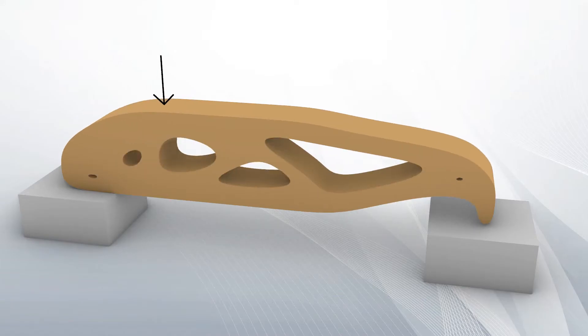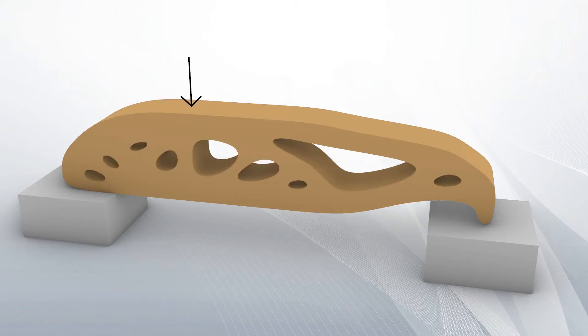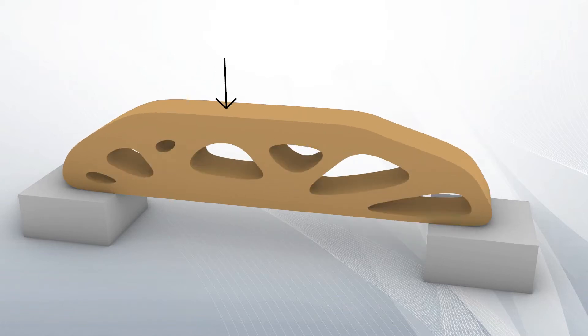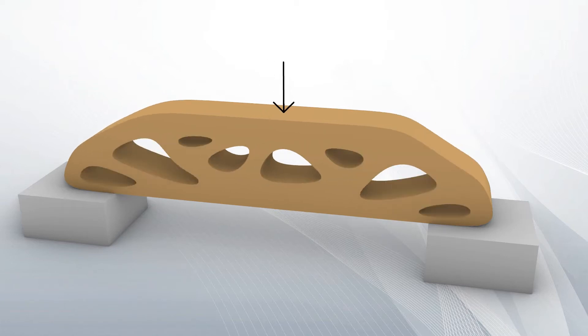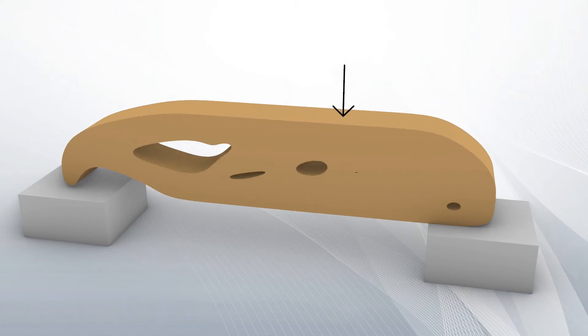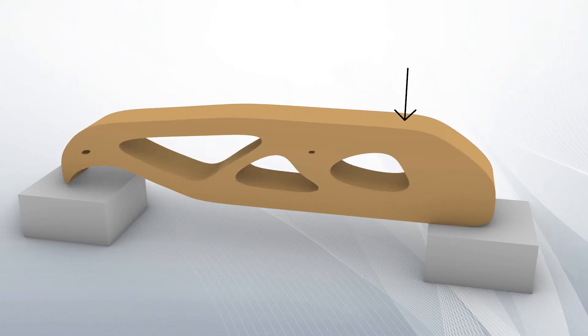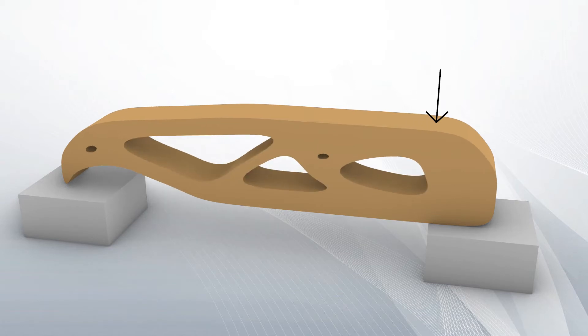And now if I run that as an animation, as you move the load, what the algorithm thinks is a good place to delete material. As we go past the halfway point, it should mirror in the other direction.